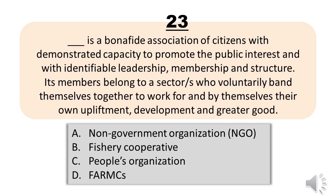Number 23. Blank is a bona fide association of citizens with demonstrated capacity to promote the public interest and with identifiable leadership, membership and structure. Its members belong to a sector/s who voluntarily band themselves together to work for and by themselves their own upliftment, development and greater good. A. Non-government organization, NGO. B. Fishery cooperative. C. People's organization. The correct answer is Letter C. People's organization.